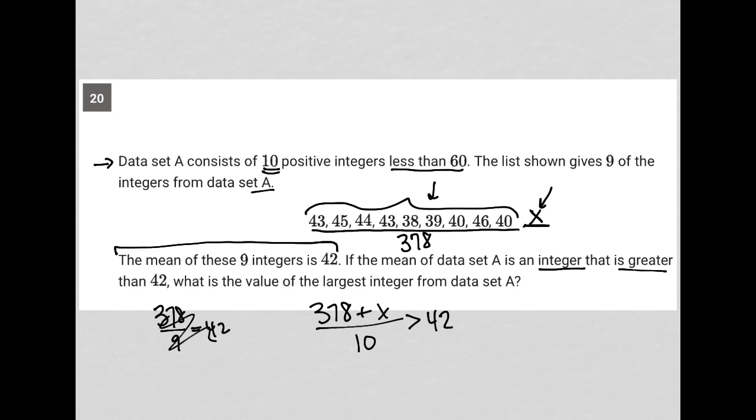And we're told that it's an integer, right, which is important because that means it's not a decimal. The question goes on to say, what is the value of the largest integer from data set A? Well, I can just simplify this inequality here by multiplying both sides by 10. And I'd have 378 plus X is greater than 420.